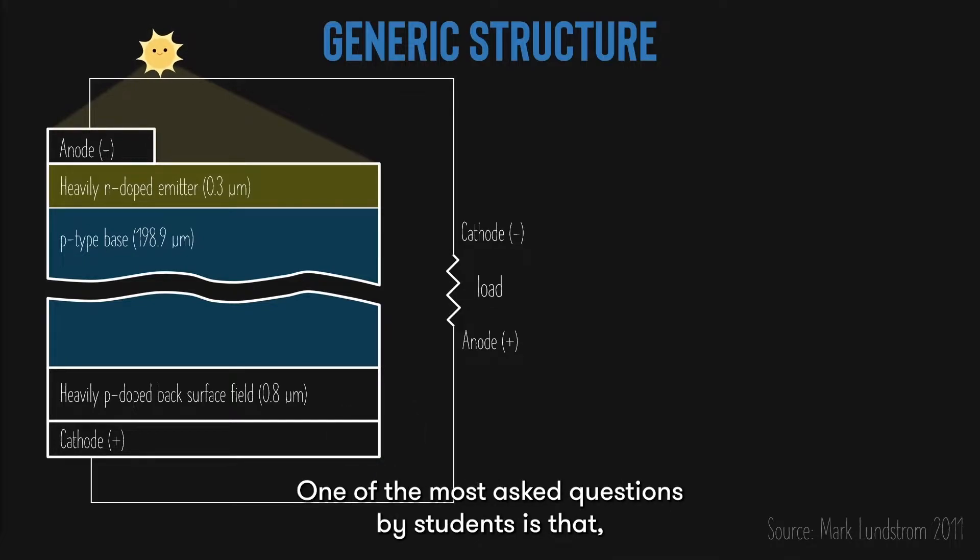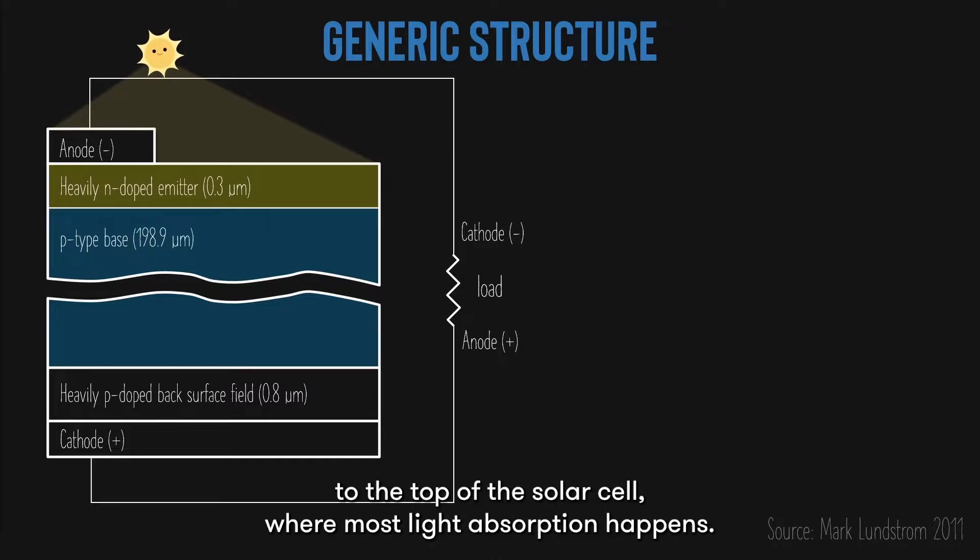One of the most asked questions by students is why is the P base so thick while the N layer is so thin? Well, the reason for that is to bring the P-N junction as close as possible to the top of the solar cell, where most light absorption happens.